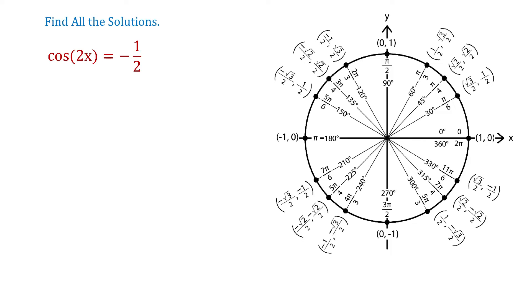Hello, in this video we will solve the equation cosine of 2x equals negative 1 half. To solve it and to find all the solutions we will use the unit circle.